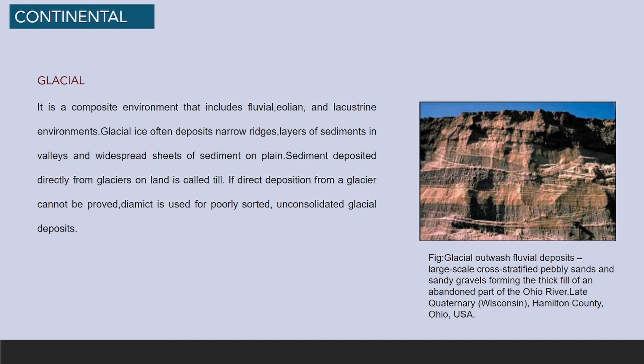Glacial is a composite environment that includes fluvial, aeolian and lacustrine environments. Glacial ice often deposits narrow ridges, layers of sediments in valleys, and widespread sheets of sediment on the plain. Sediment deposited directly from glaciers on land is called till. If direct deposition from a glacier cannot be proved, diamict is used for poorly sorted, unconsolidated glacial deposits.